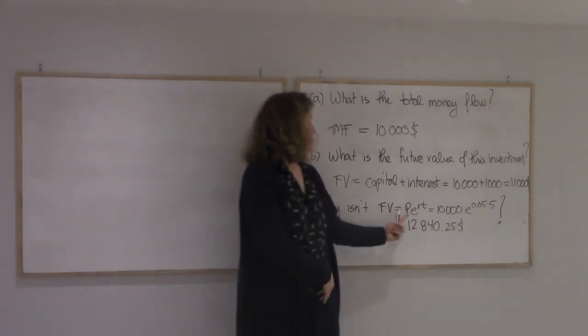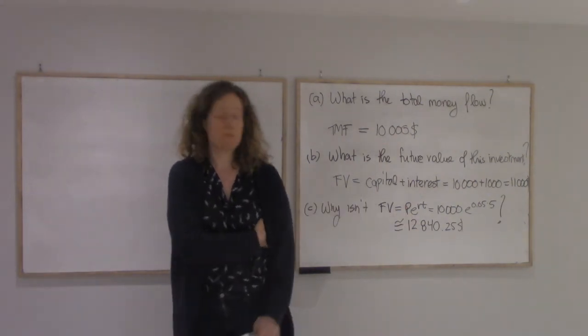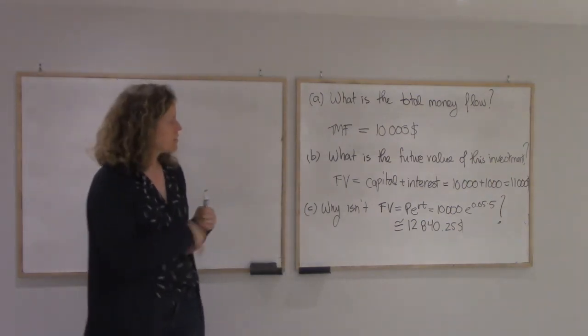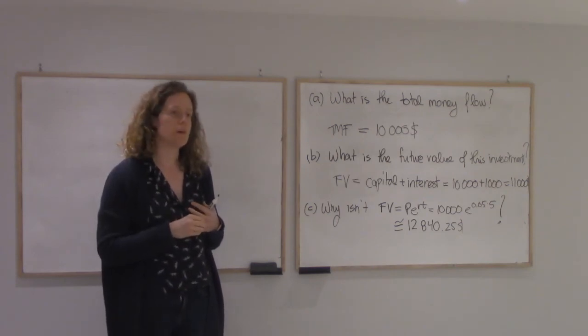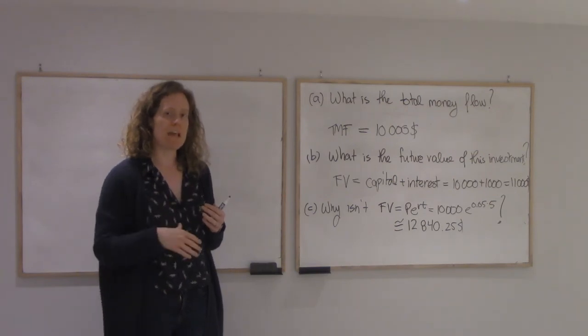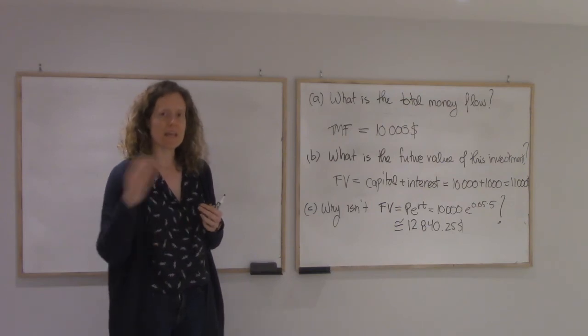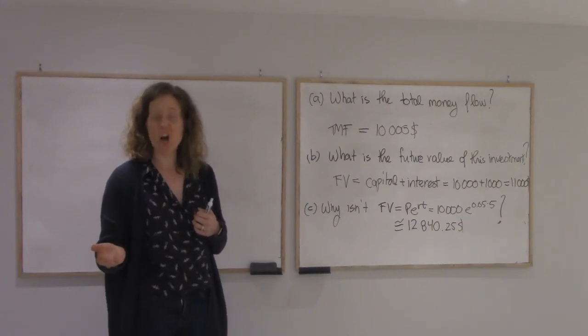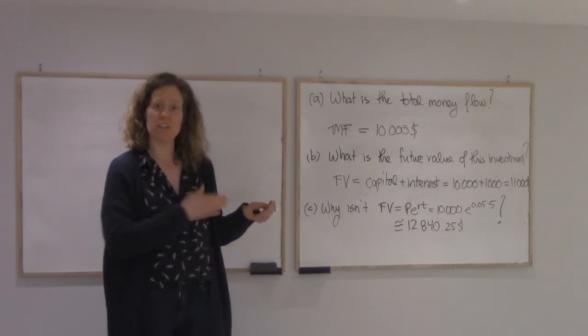So remember, this is the formula if you put money in the account, if you put the $10,000 in an account at a 5% interest rate compounded continuously and just wait for five years. But that's not what we're doing. What the company is getting is a money flow of money. They're getting $10,000 but not all at once, not at the start of the investment. They're getting it continuously throughout the five years. So part of this $10,000 they got after four years. So they didn't invest the entire $10,000 for the entire five years.